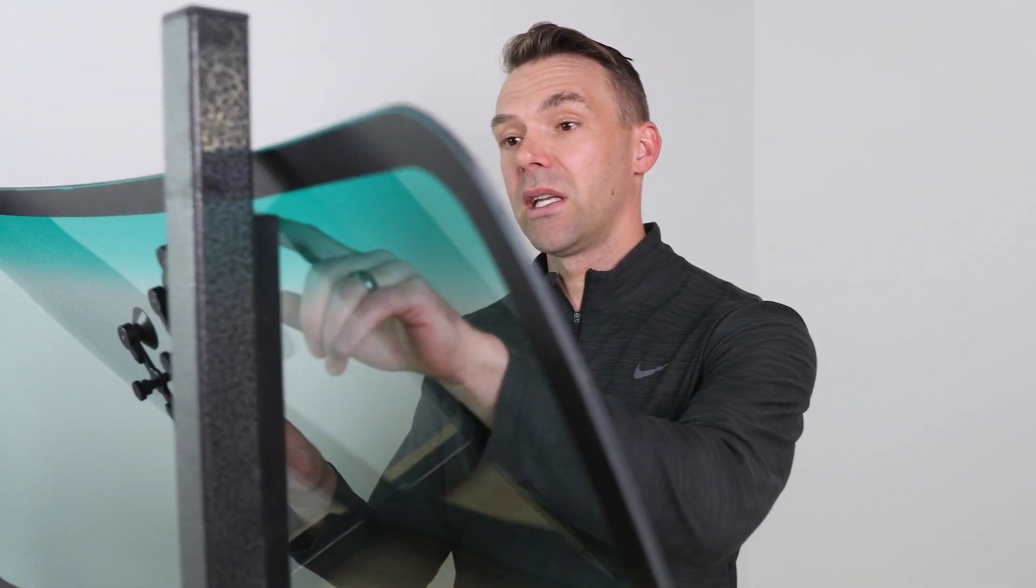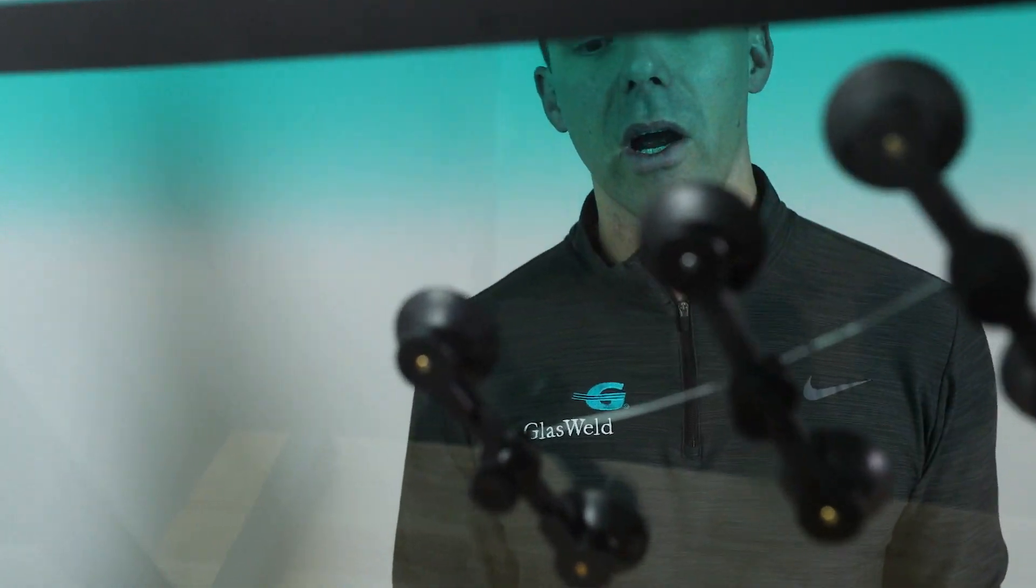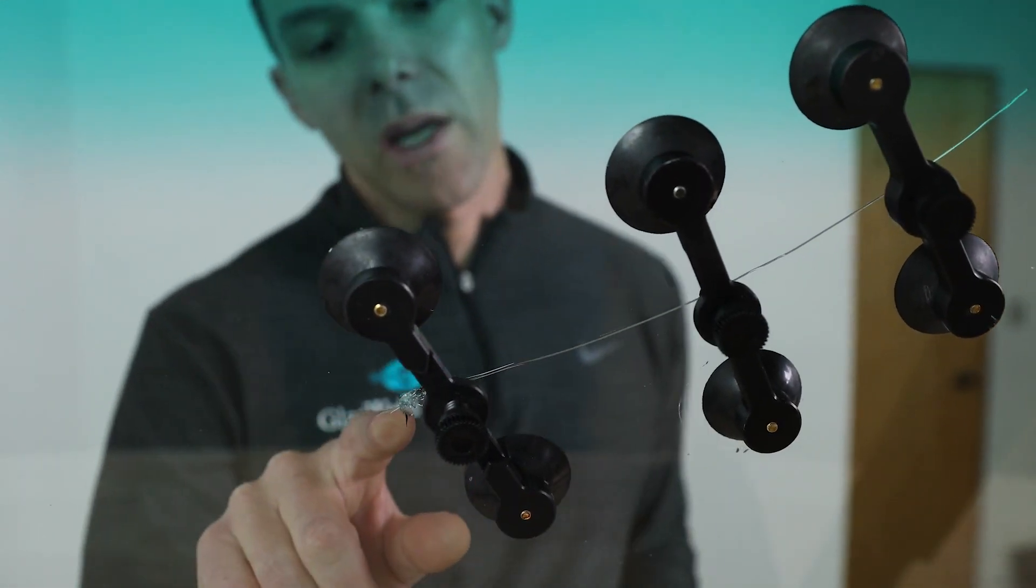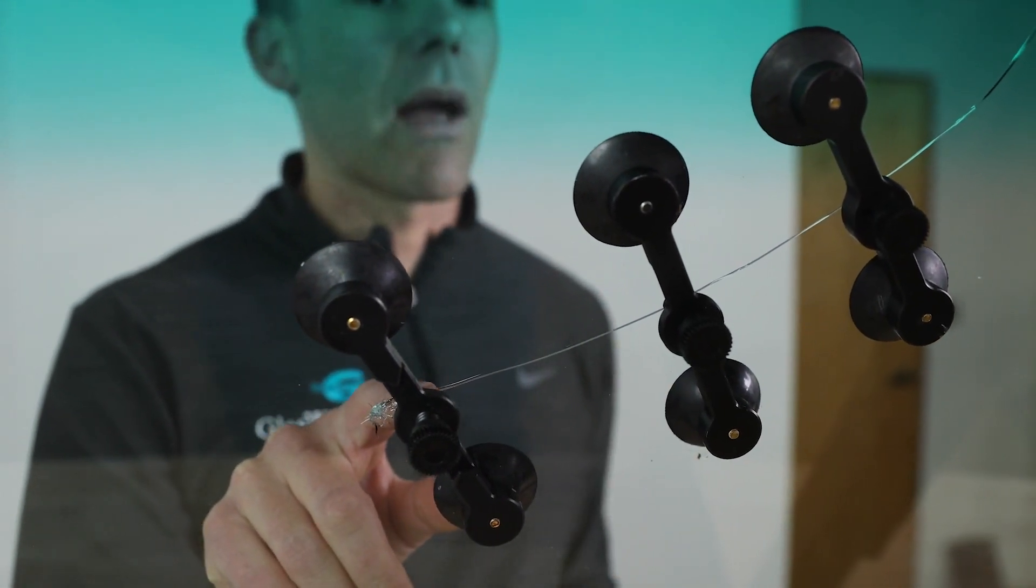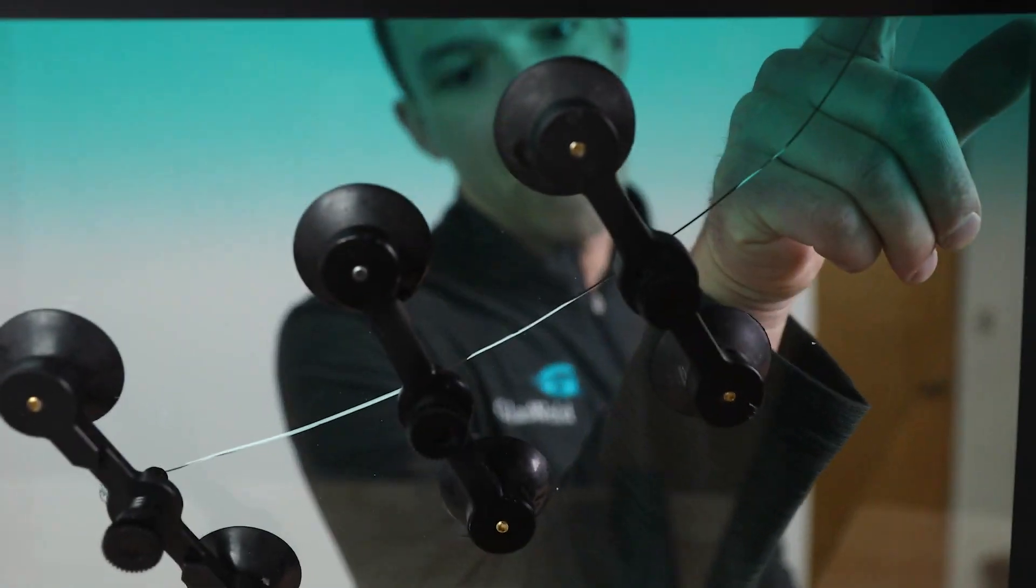So we're going to jump into showing you what we're going to be working on today. We've got a windshield here ready to go and we're going to do a full tutorial video on that. We've got about a 14 inch, maybe even 16 inch crack here, and then you notice that I already have a combination break here. In this case, the crack radiates out all the way to the edge.